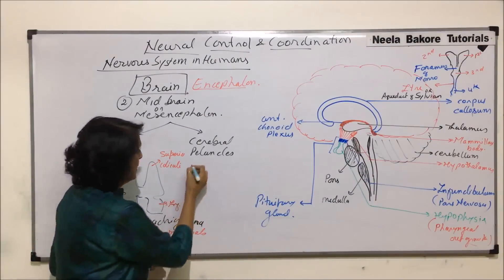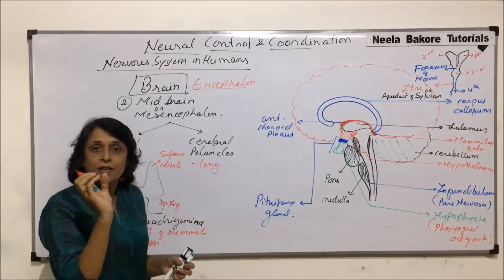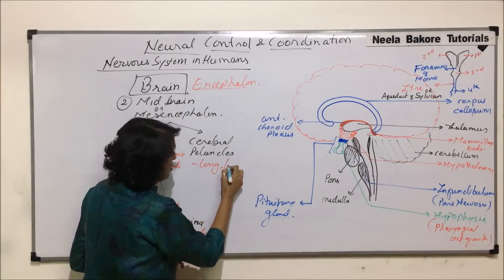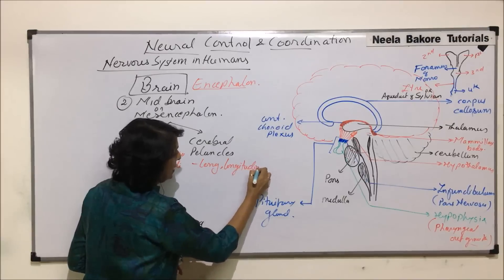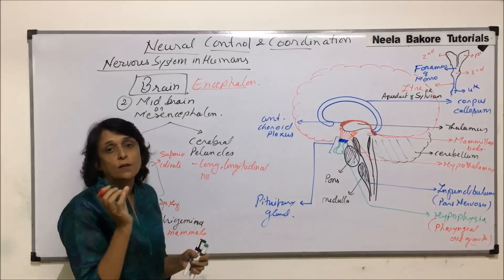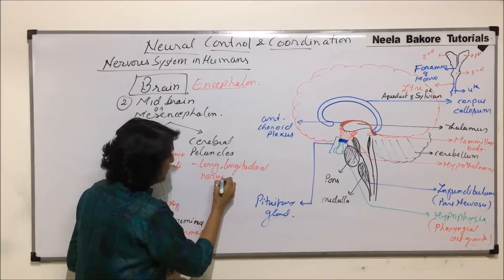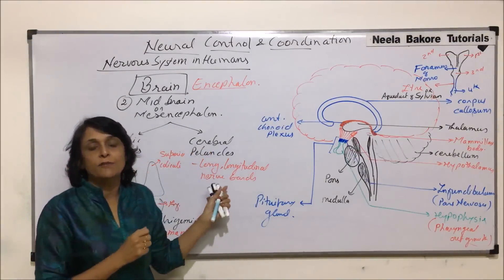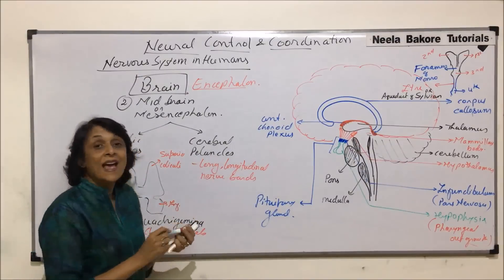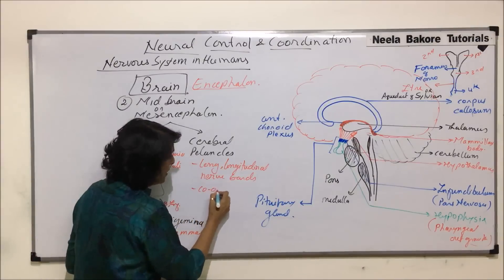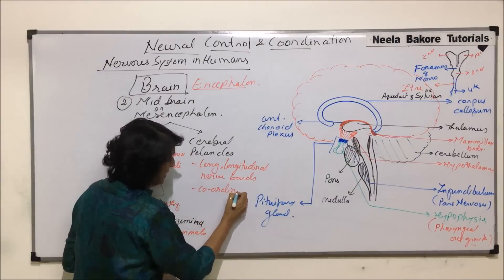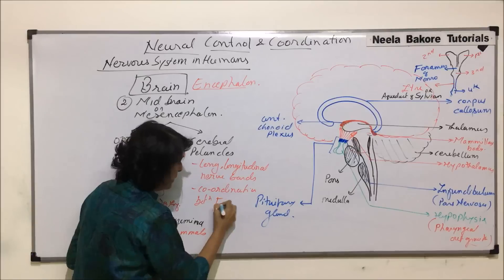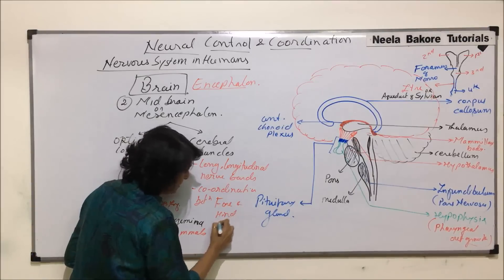Cerebral peduncles are long, sturdy, rigid longitudinal nerve fiber bands. These are long strands or long bands which are made up of longitudinal nerve fibers. Their function is coordination between the forebrain and the hindbrain.